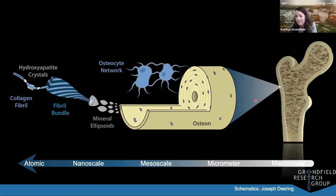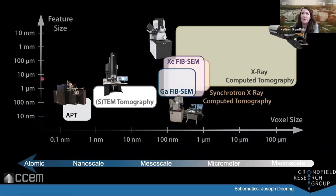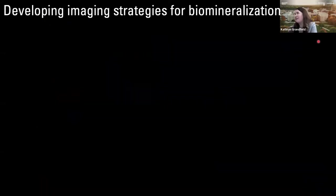In our lab we employ many characterization tools. At the smallest length scales, we use atom probe tomography to probe bone structure. Working up in length scale towards the micrometer scale, we use transmission electron microscopy, focused ion beam microscopy, and also micro CT. Today I've picked out three studies from my lab over the past few years to highlight.